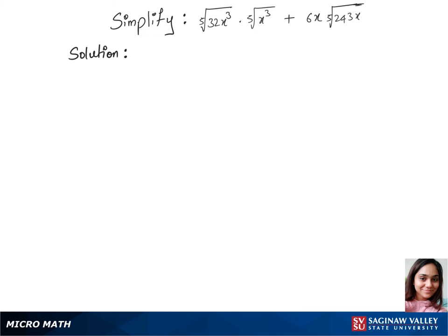Let's simplify this question. We'll first separate the fifth root between those terms, so that's fifth root of 32 times fifth root of x³ times fifth root of x² plus 6x times fifth root of 243 times fifth root of x.